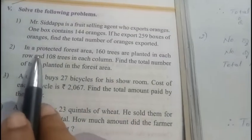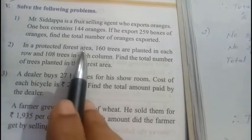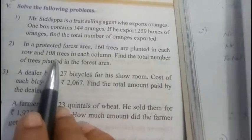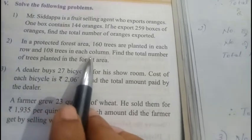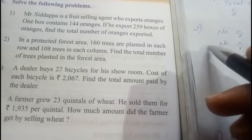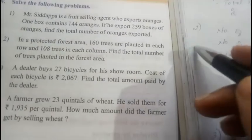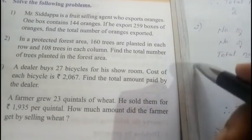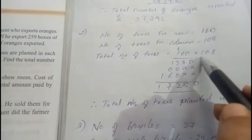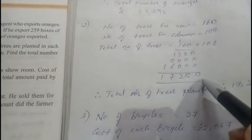In a protected forest area, 160 trees are planted in each row and 108 trees in each column. They have planted 160 in a row and 108 in a column. So how much did they plant? You need to multiply 160 into 108. I already multiplied. You need to write the total number of trees planted is 17,280.